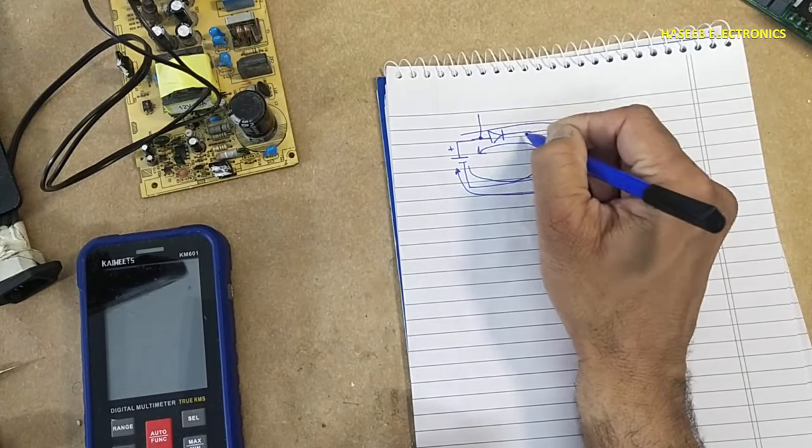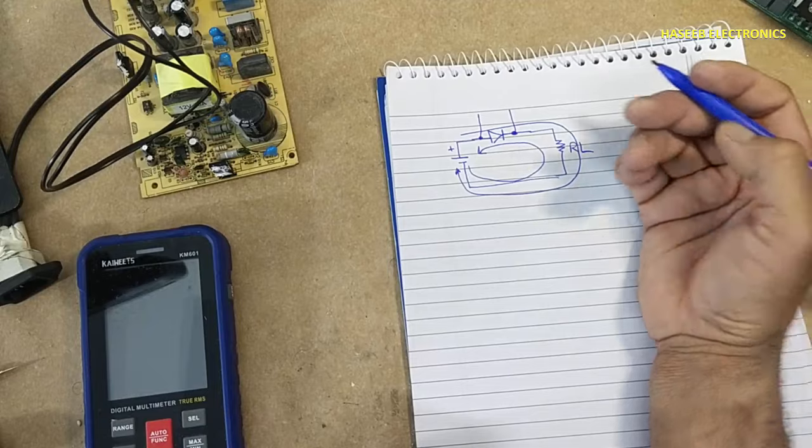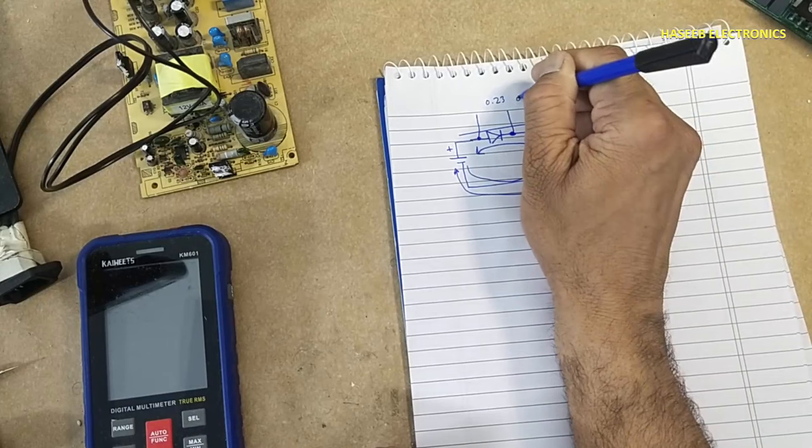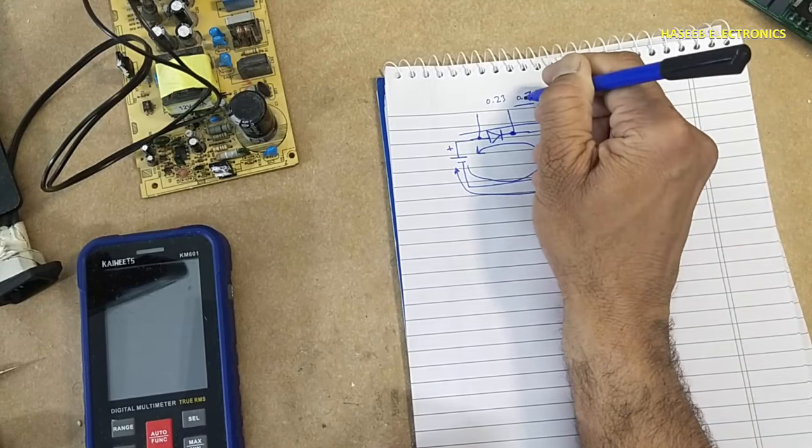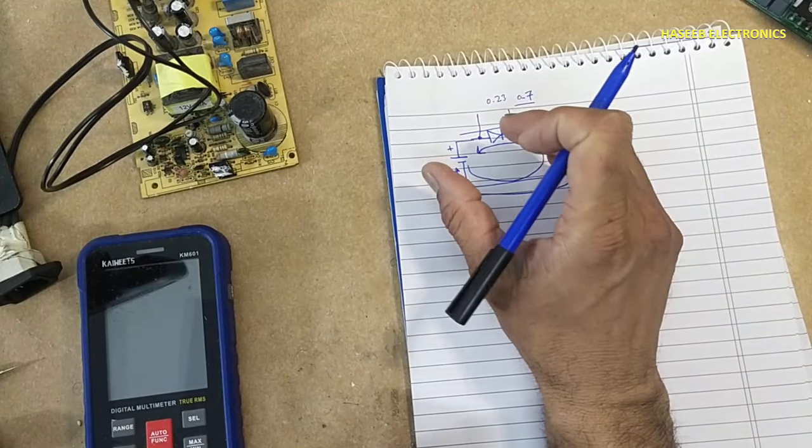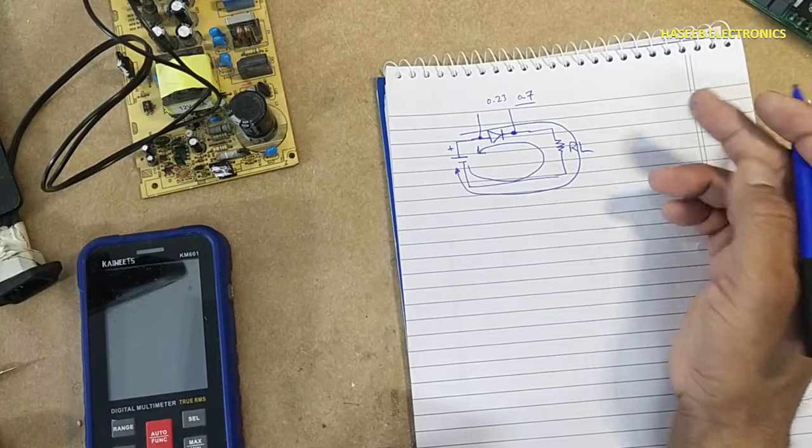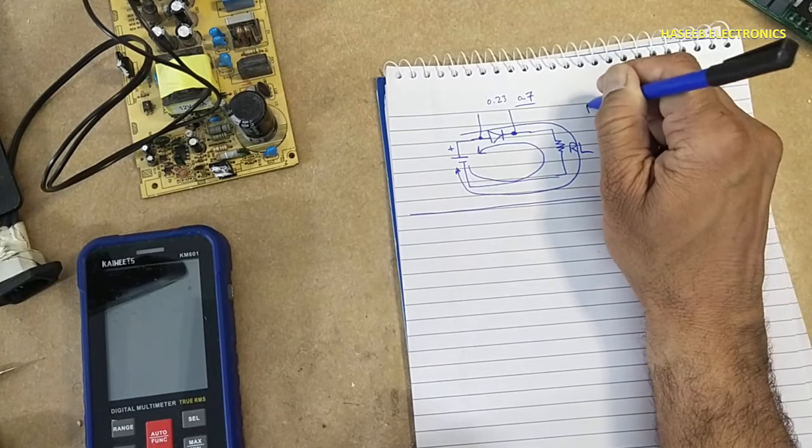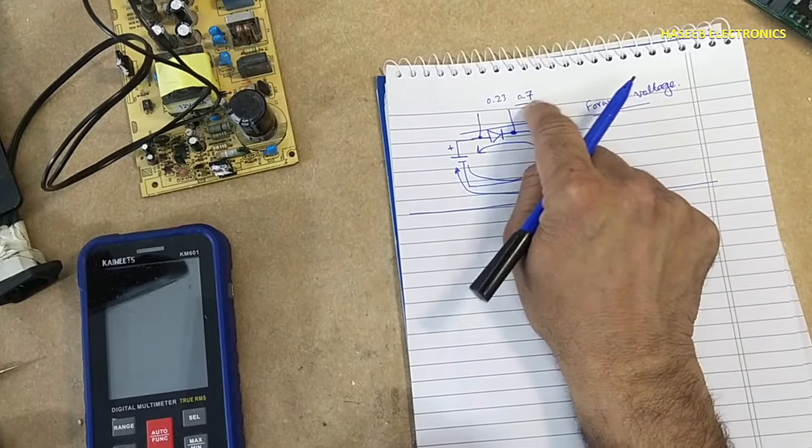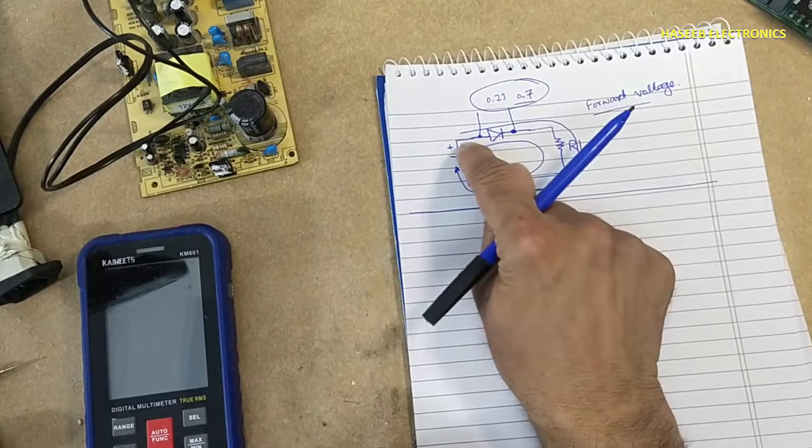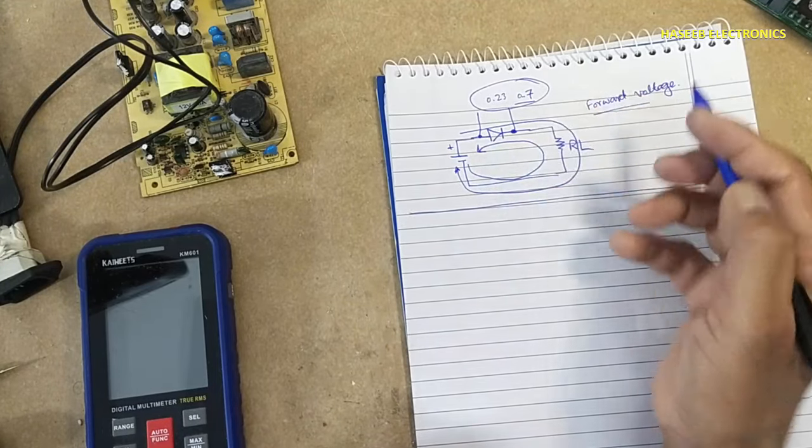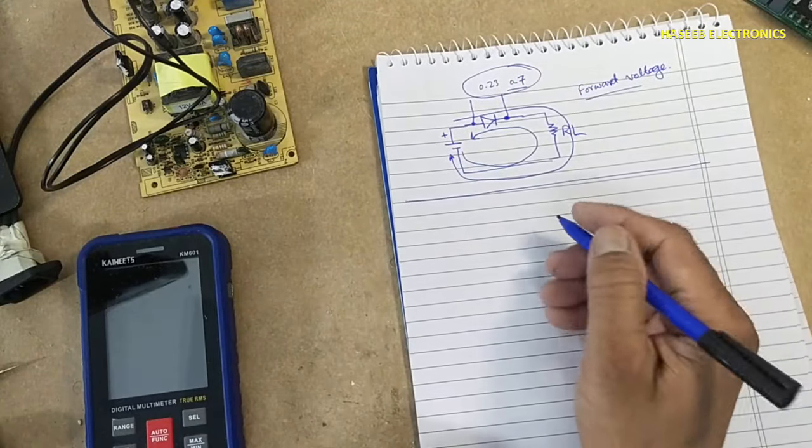If we check voltage across this diode, these will be 0.2, 0.3, 0.7 volts depending on the type of the diode, depending on the current. These are called forward voltage. When the battery voltage will exceed from this level, the current will start to flow. These are junction voltage, barrier voltage. But when we connect this diode in AC circuit: